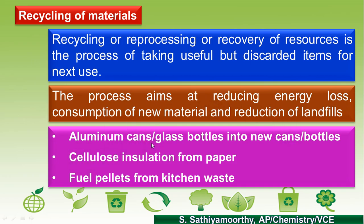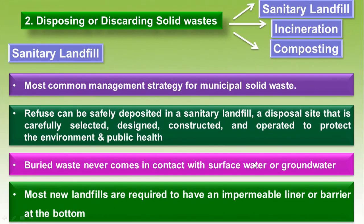Examples of recycling include aluminium cans and glass bottles, which are always recycled. We can also recycle cellulose from used papers, and from kitchen waste we can make fuel pellets that can be used as fuel for burning. If none of the 3R principles are applicable, we move to disposing or discarding solid waste.